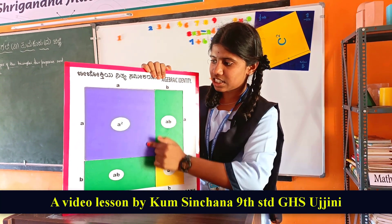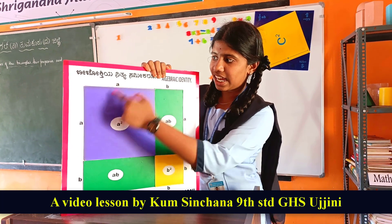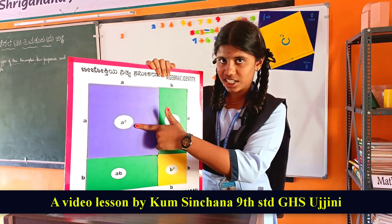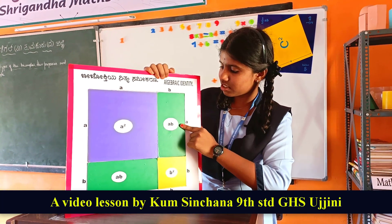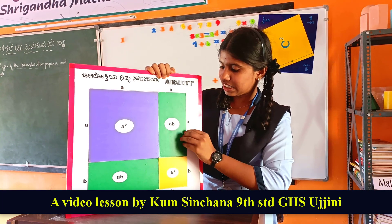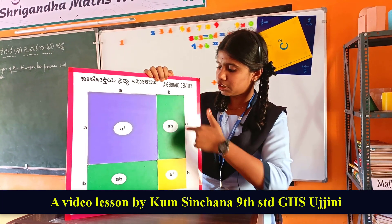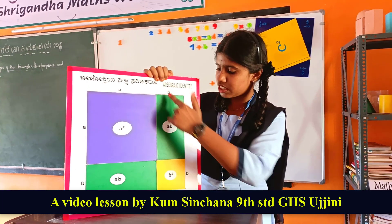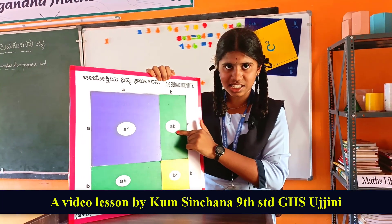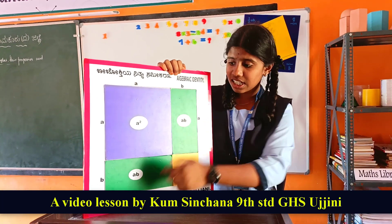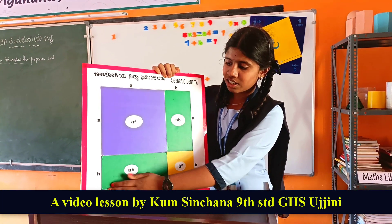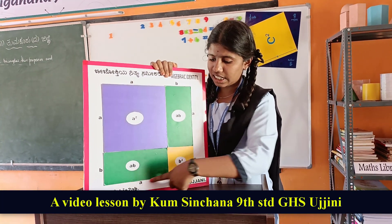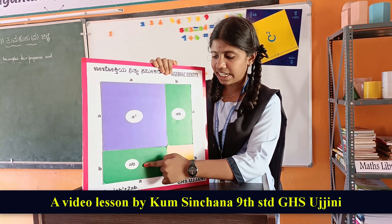Now, there is an a² square: a into a equals a². Next, it is a rectangle — length is a and breadth is b, so we take it as ab. Similarly, the other rectangle has breadth b and length a, giving ab.